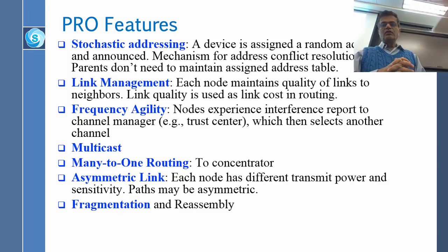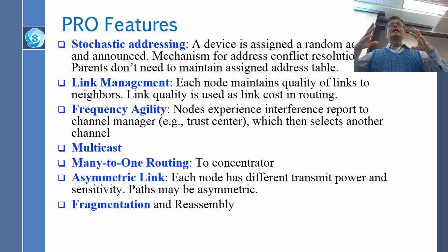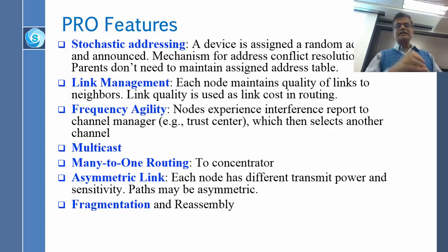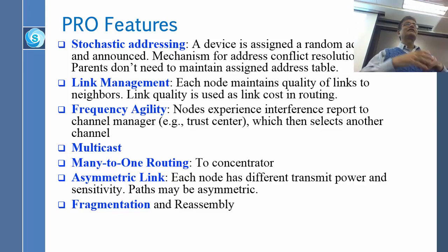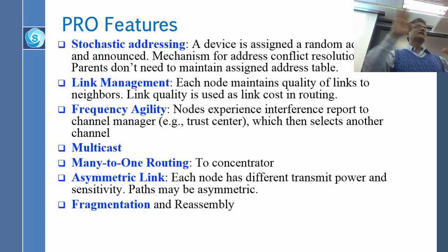Frequency agility: if a node experiences interference, it reports to the channel manager at the trust center, which then selects another channel. For example, if a particular channel has a lot of noise, those nodes report too much interference and the manager says, let's try channel 2. If there is too much interference, the link cost will be very high and the network will move to another channel.